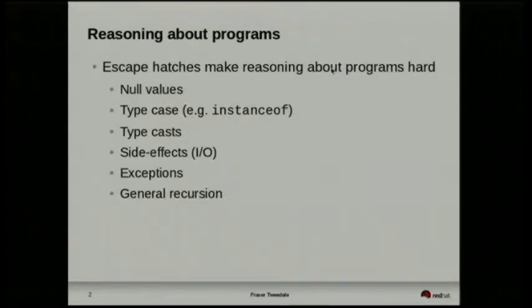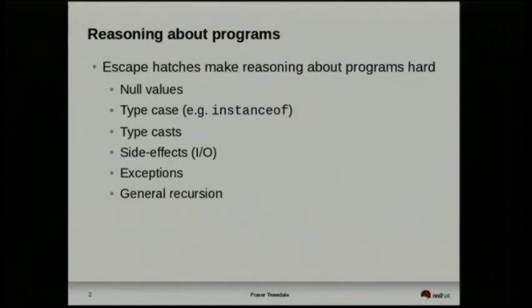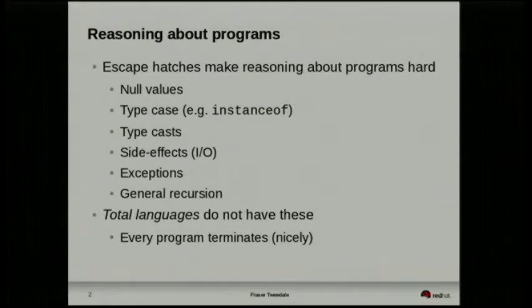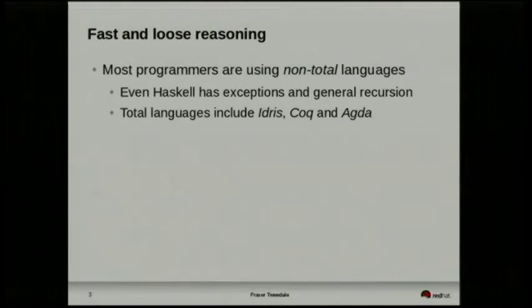Theorems for free — reasoning about programs. All of these things make reasoning about programs more difficult: null values, type casing (instance of operators), type casting, side effects, exceptions, and general recursion — recursion that can potentially go on forever. Total languages do not have any of these. In a total language every program terminates nicely. However, most programmers are using non-total languages — even Haskell has exceptions and general recursion. But there are total languages: some of these include Idris, Coq, and Agda.